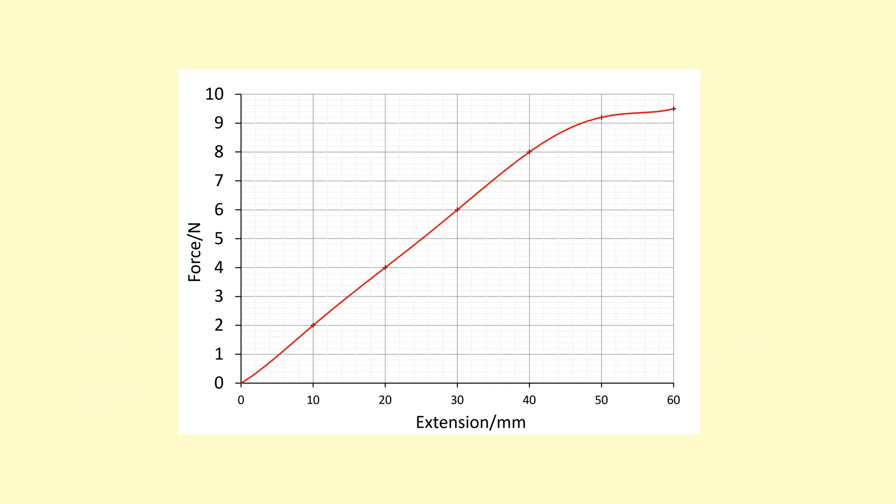For an object that follows Hooke's law, if we plot force against extension, we should get a straight line that goes to the origin.